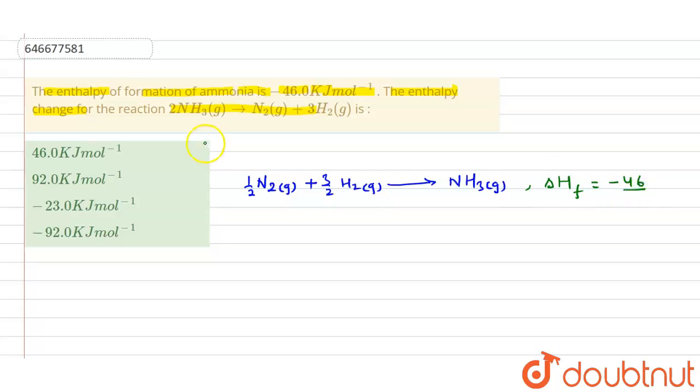Now, as we can see, this value is multiplied by twice. So when you multiply by twice, enthalpy will also be double.